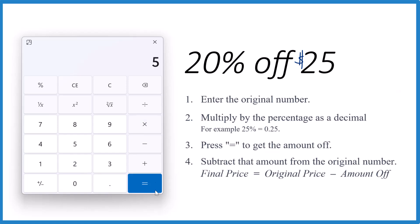Then we hit the equals here and we get 5. So that number 5, that represents 20% of $25. That's how much you would save if you spent $25 and had 20% off.